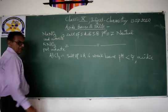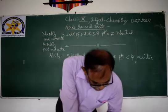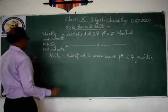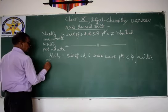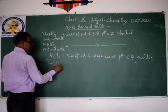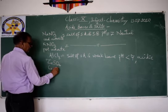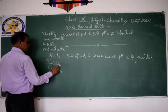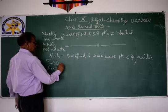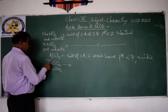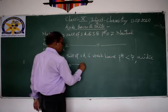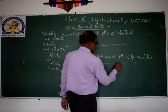Another example is zinc sulfate and cobalt sulfate, et cetera. These are salts of strong acid and weak base. So zinc sulfate and cobalt sulfate — their aqueous solutions will be acidic.